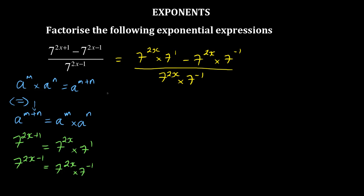Now if we continue, you can see something that is common. We have got 7 to the power 2x, 7 to the power 2x, and 7 to the power 2x, and more importantly we have a negative sign in between.